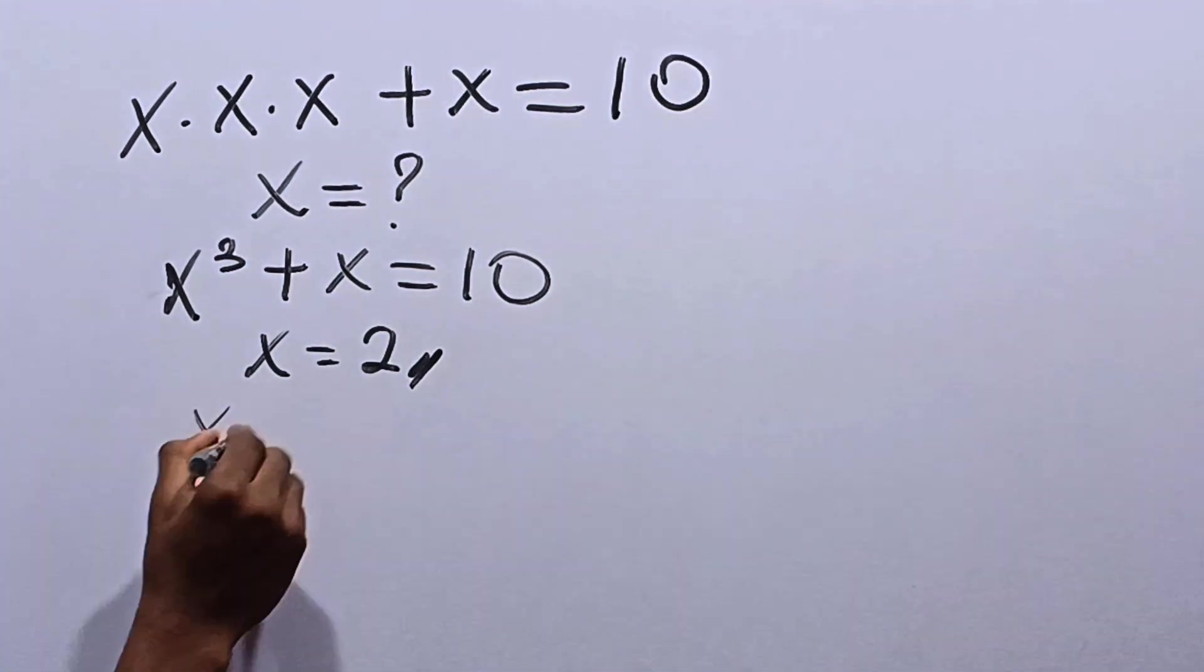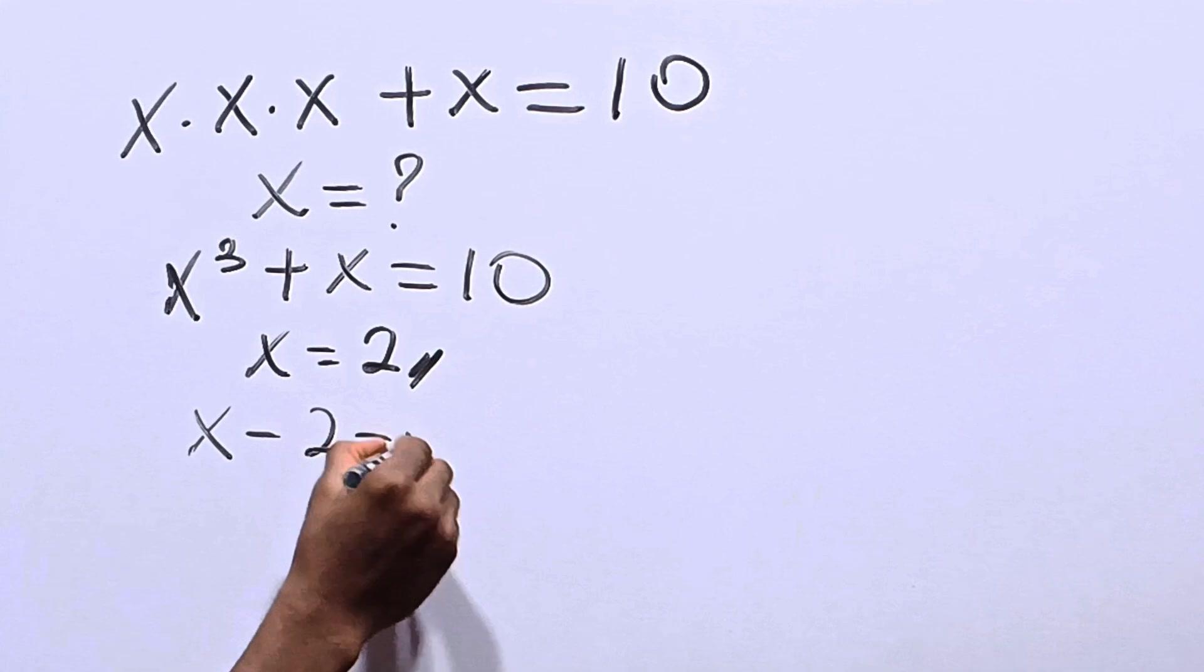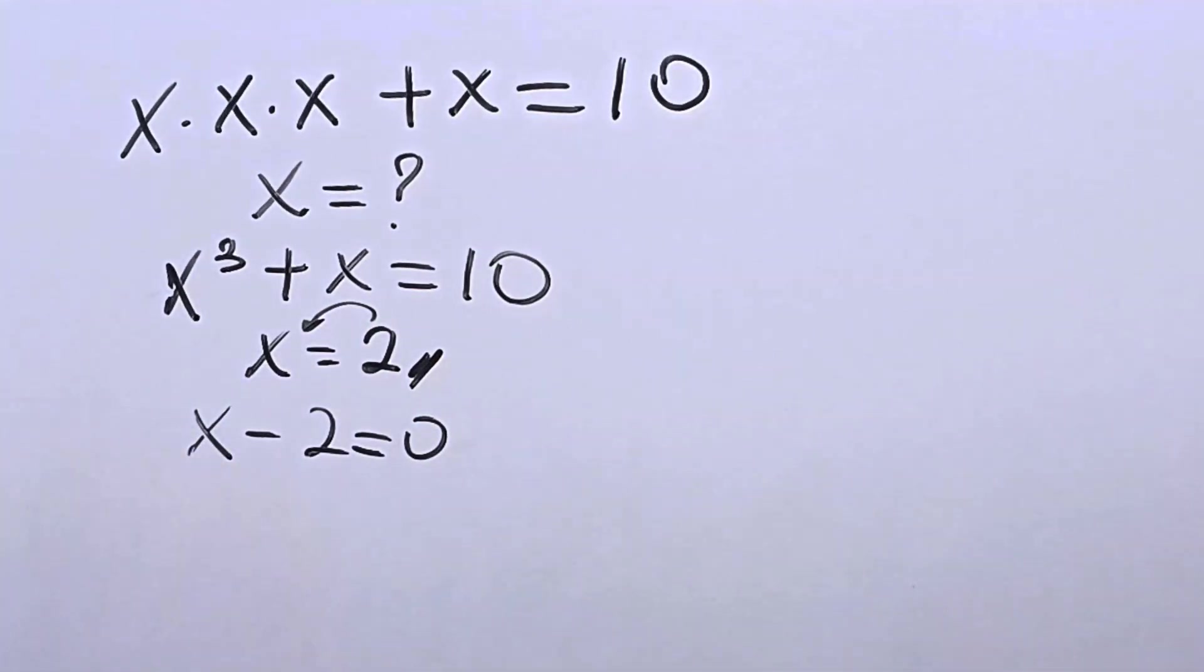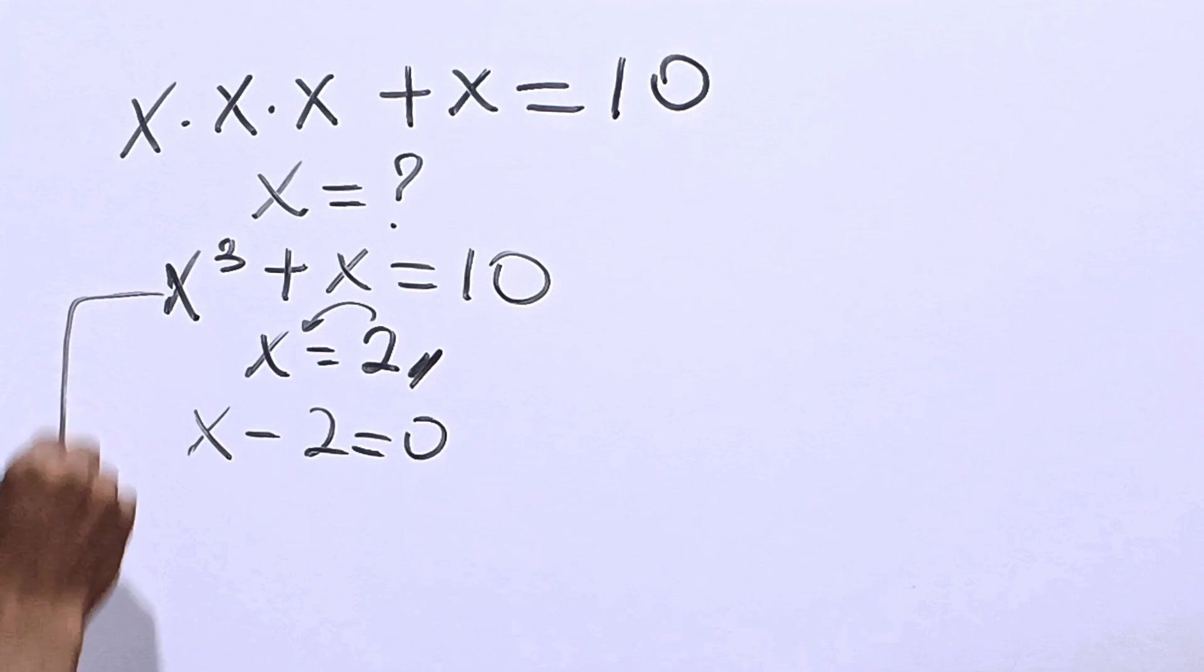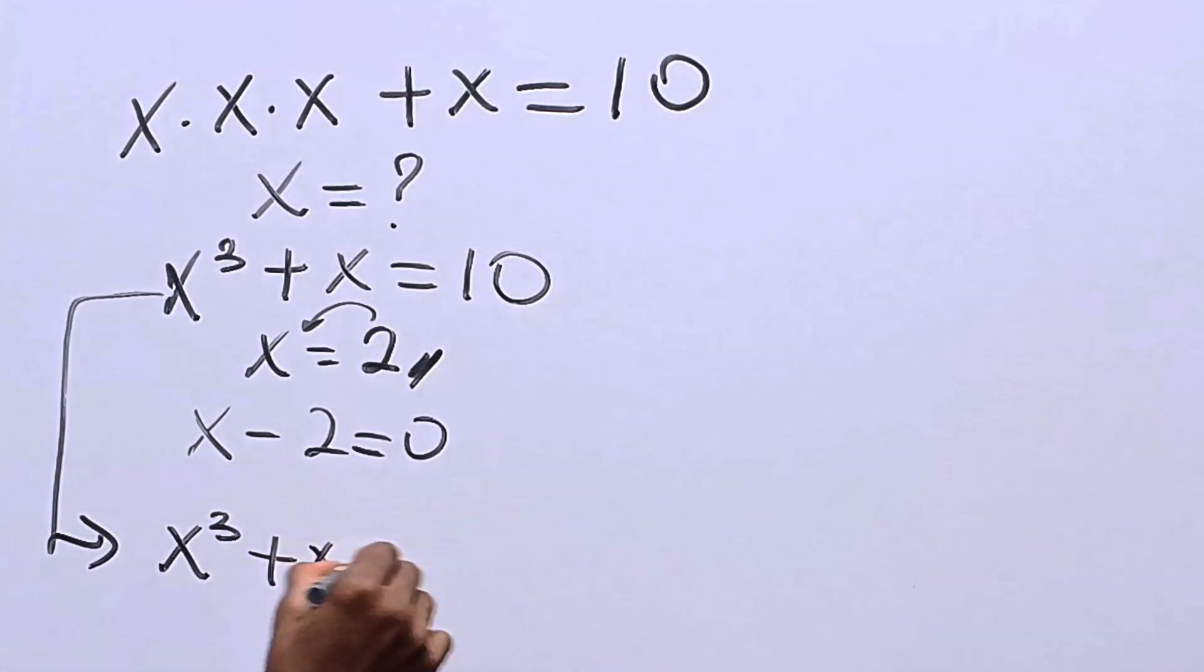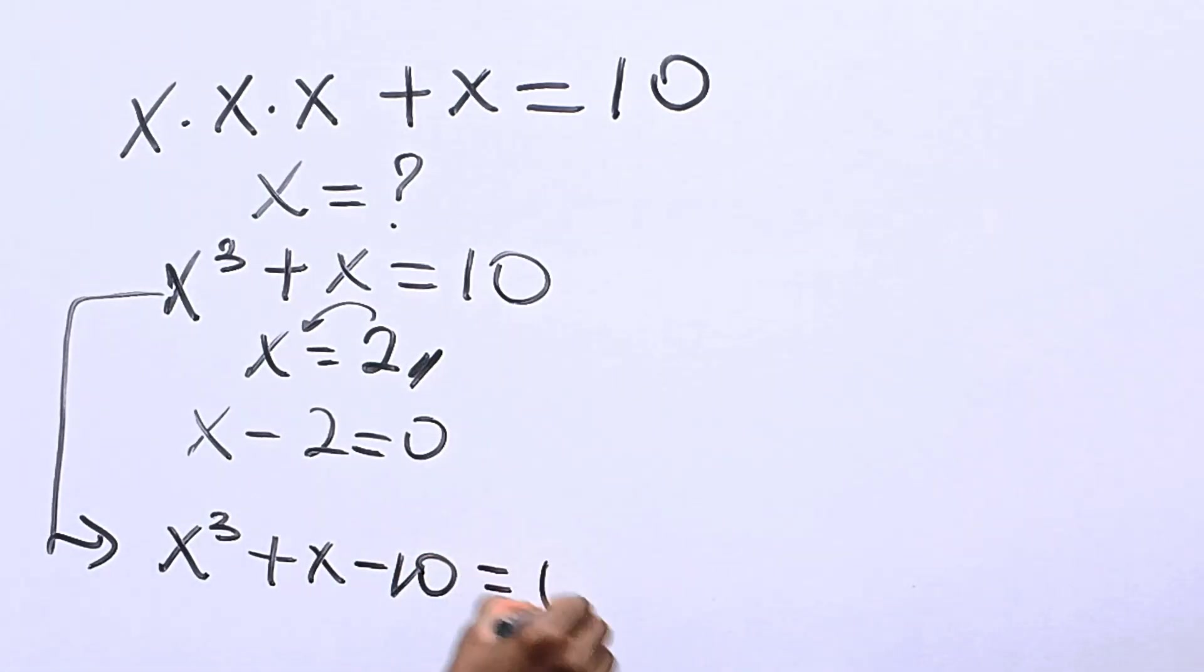From here, we can now say that x minus 2 equals 0. Bring this to the other side. Now, from this equation, we have that x cubed plus x minus 10 becomes equal to 0.